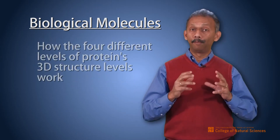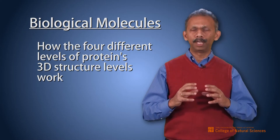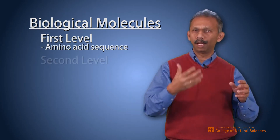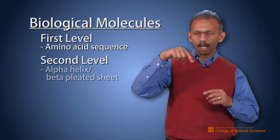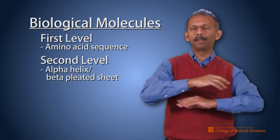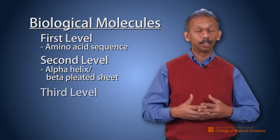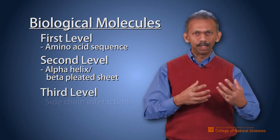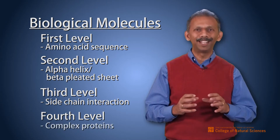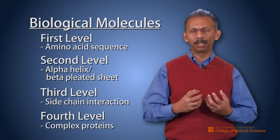Then understand how the four different levels of protein three-dimensional structure work. The primary structure is the amino acid sequence. The second level involves how they form an alpha helix or a beta-pleated sheet. The third is the tertiary structure with side chain interactions. And the fourth level applies to complex proteins where subunits interact together.